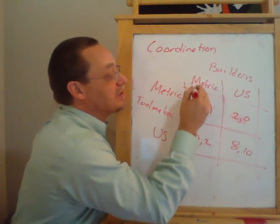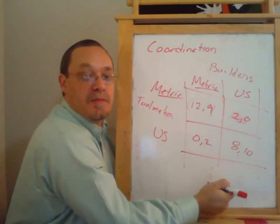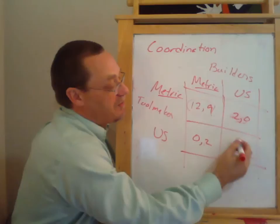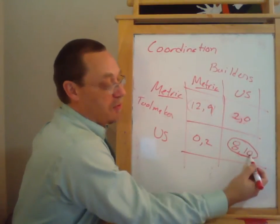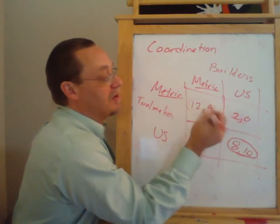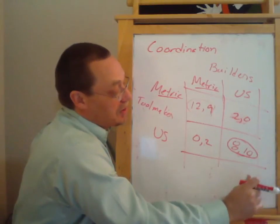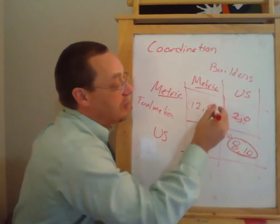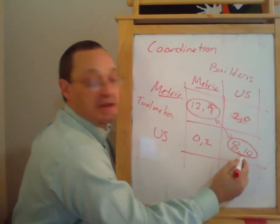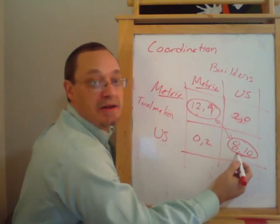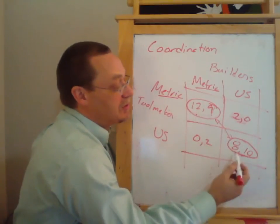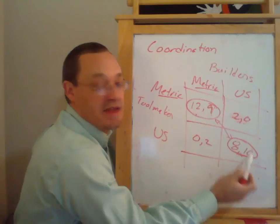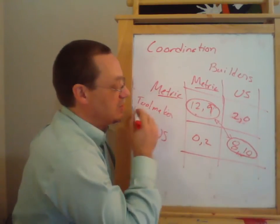In coordination games, the key thing is you win by coordinating on a single strategy. But notice there's a little bit of tension in the game I've built here, because the builders would prefer that they coordinate on U.S. units of measurement, and the tool makers would like them to coordinate on metric units. These are both Pareto efficient outcomes and both have high total payoffs, but the metric one is even higher — getting 21 total payoffs versus 18. The question is, how do you actually switch to there? The builders are not going to want to switch to metric because that would take them from payoffs of 10 down to 9.